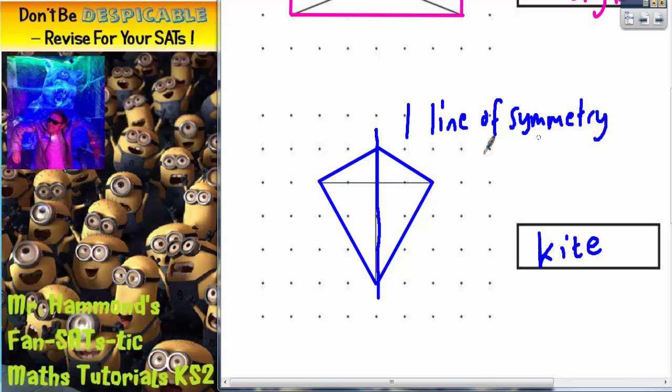You can get trapeziums that do have one line of symmetry, but it's not the case for all trapeziums. So a kite is the only one that has definitely one line of symmetry, and also a kite is recognizable because it has no parallel lines, and all the other quadrilaterals do have at least one pair or two pairs of parallel lines, and a kite has none.